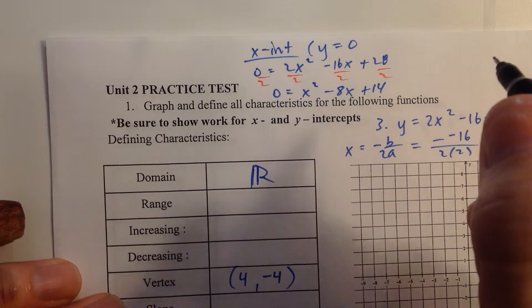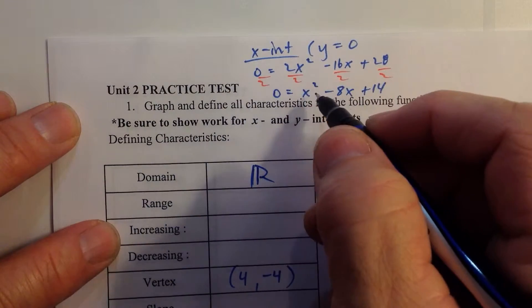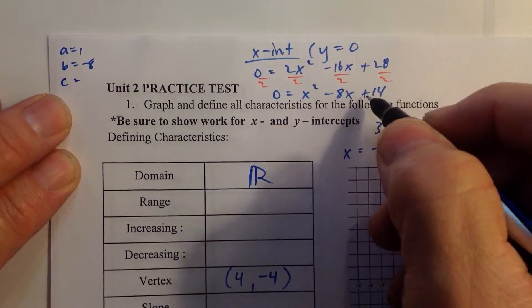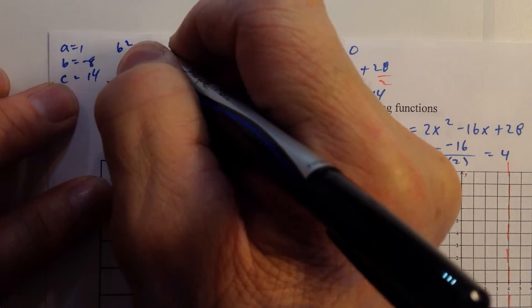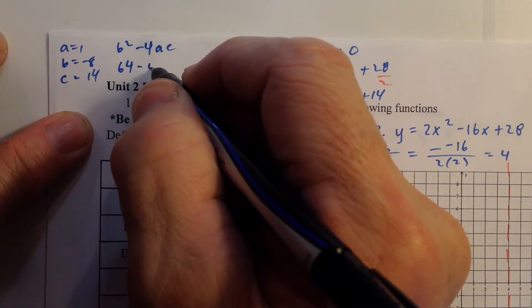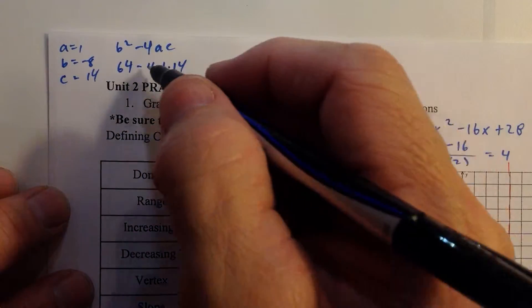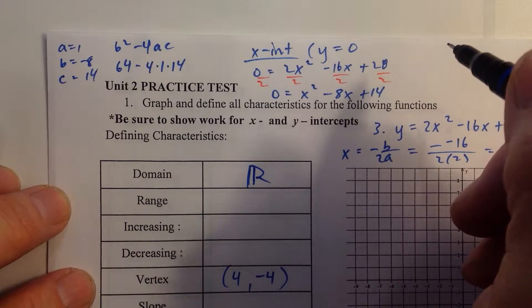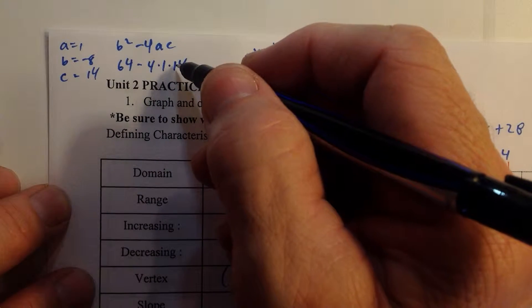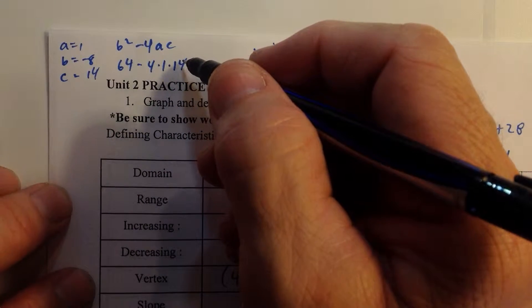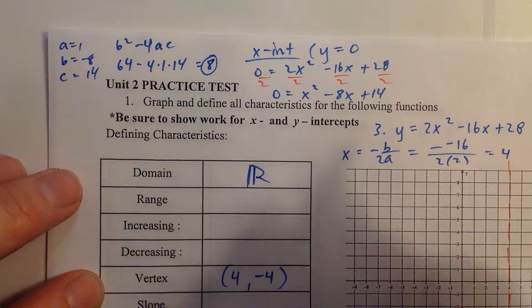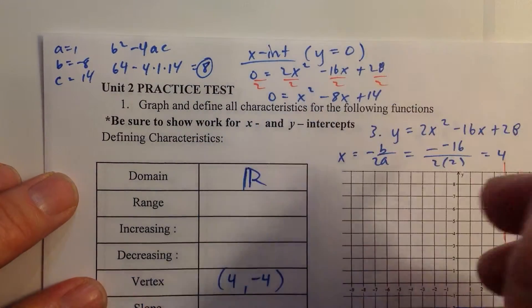I'm going to do my grunt work over here. Let a being 1, a equals 1. Remember the b is negative 8, and the c is 14. So the b squared minus 4ac is going to be b squared is 64 minus 4 times 1 times 14. What's 4 times 14? 56, right? 2 times 14 is 28, and so 4 times 14 is 56. 64 minus 56 is 8. So 8 is our b squared minus 4ac. That's our discriminant.